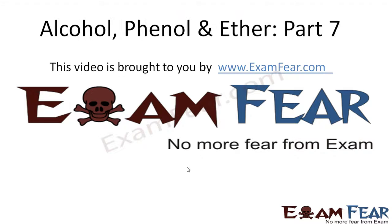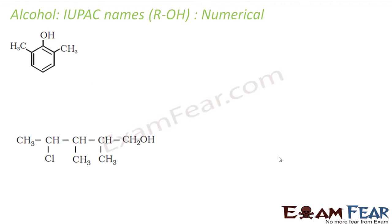Let's see this example. The OH is my primary group, so I'll number it 1, 2, 3, 4, 5, 6. At positions 2 and 4 I have methyl groups, so it is 2,4-dimethylphenol.